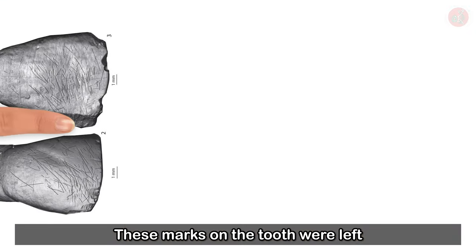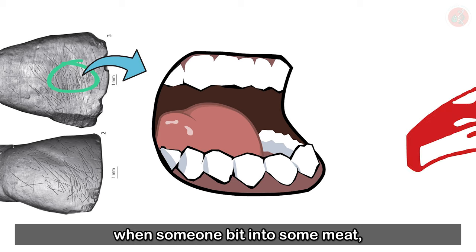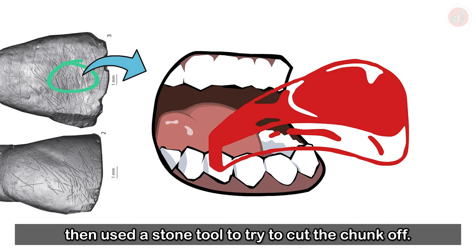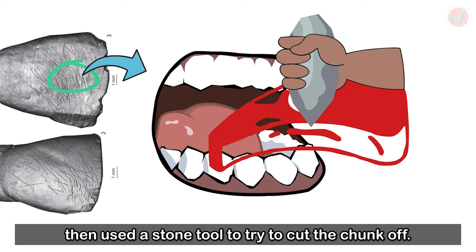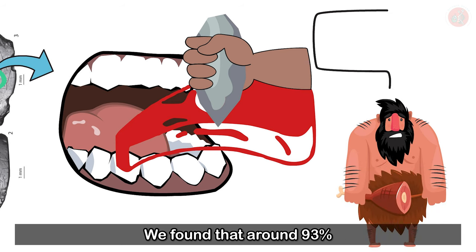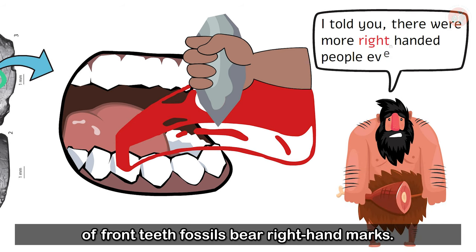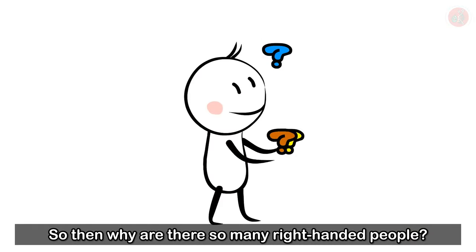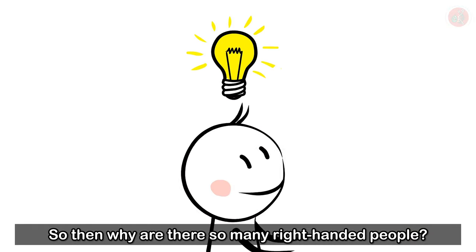These marks on the tooth were left when someone bit into some meat, then used a stone tool to try to cut the chunk off. We found that around 93% of front teeth fossils bear right-hand marks. So then, why are there so many right-handed people?